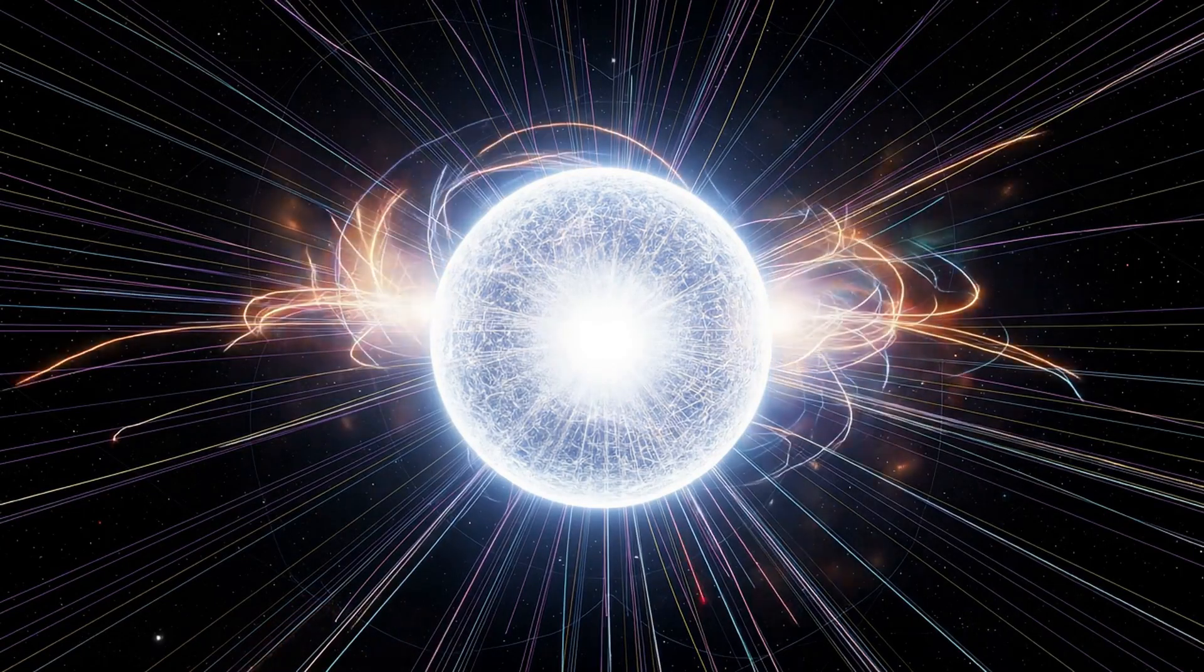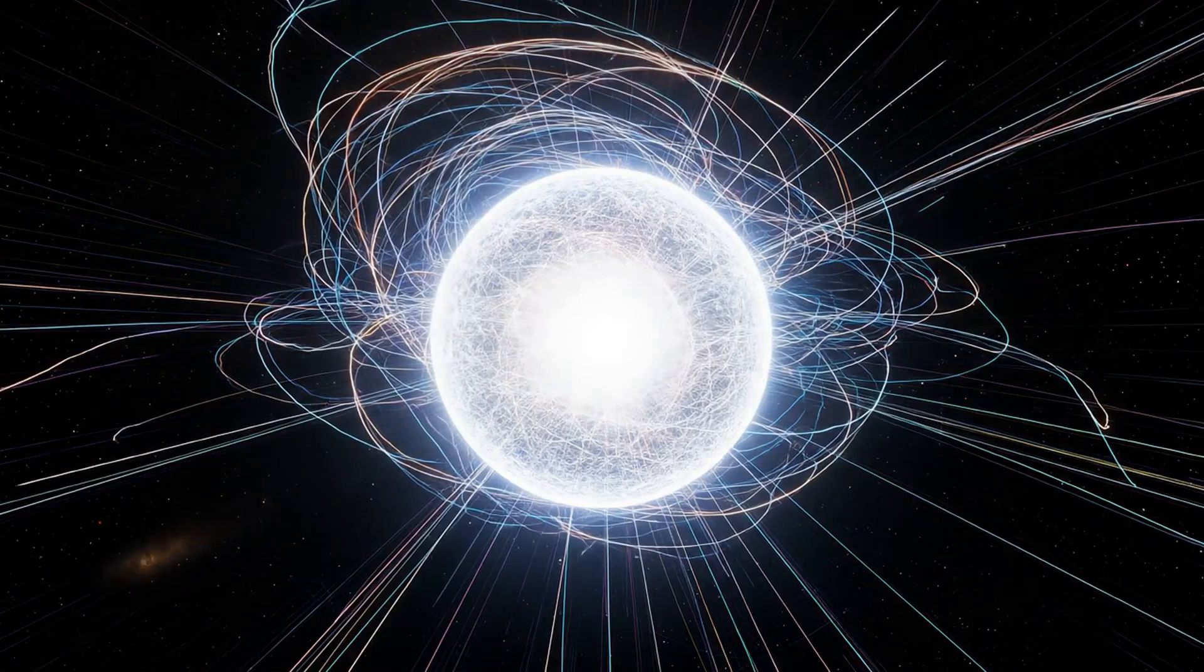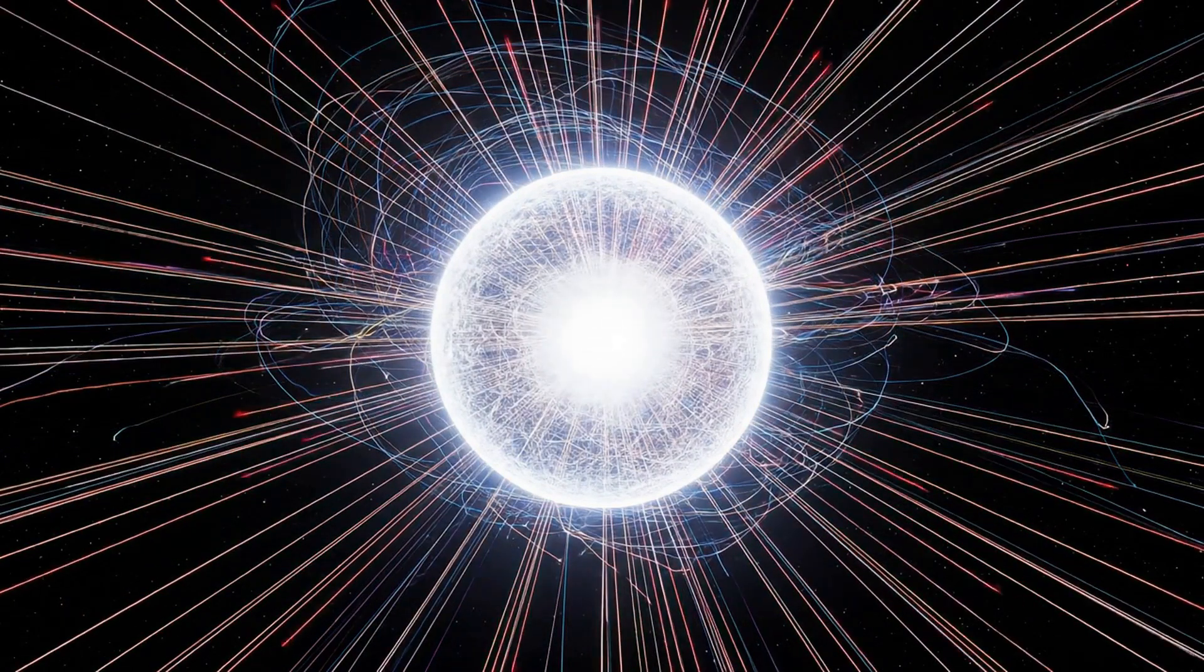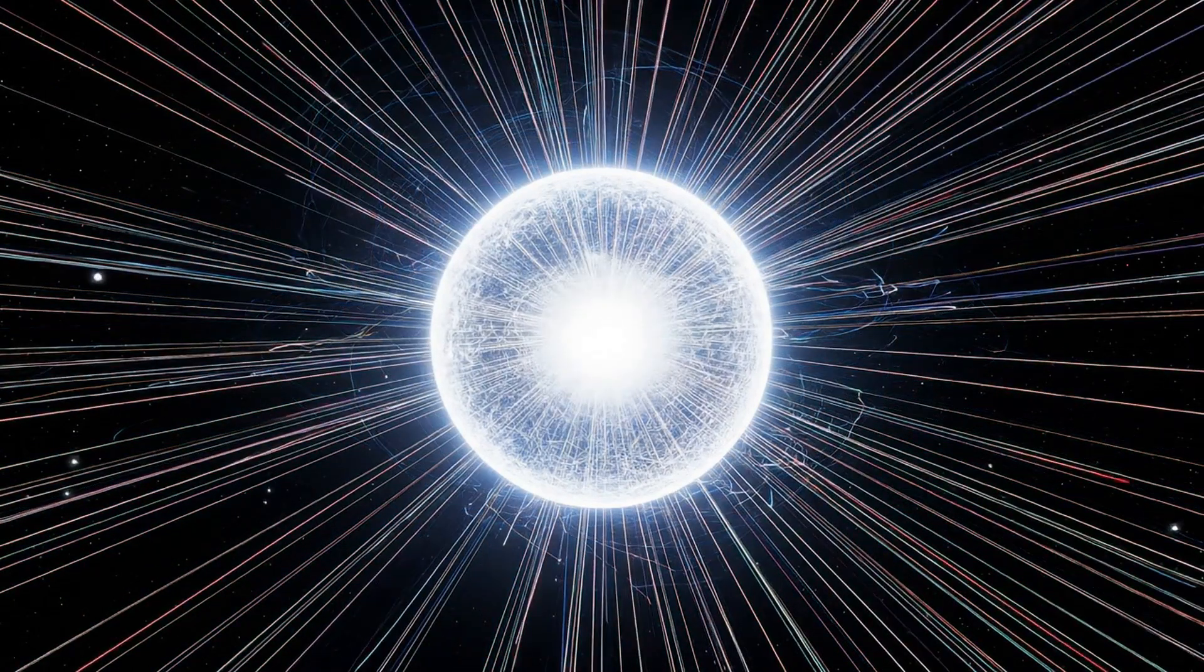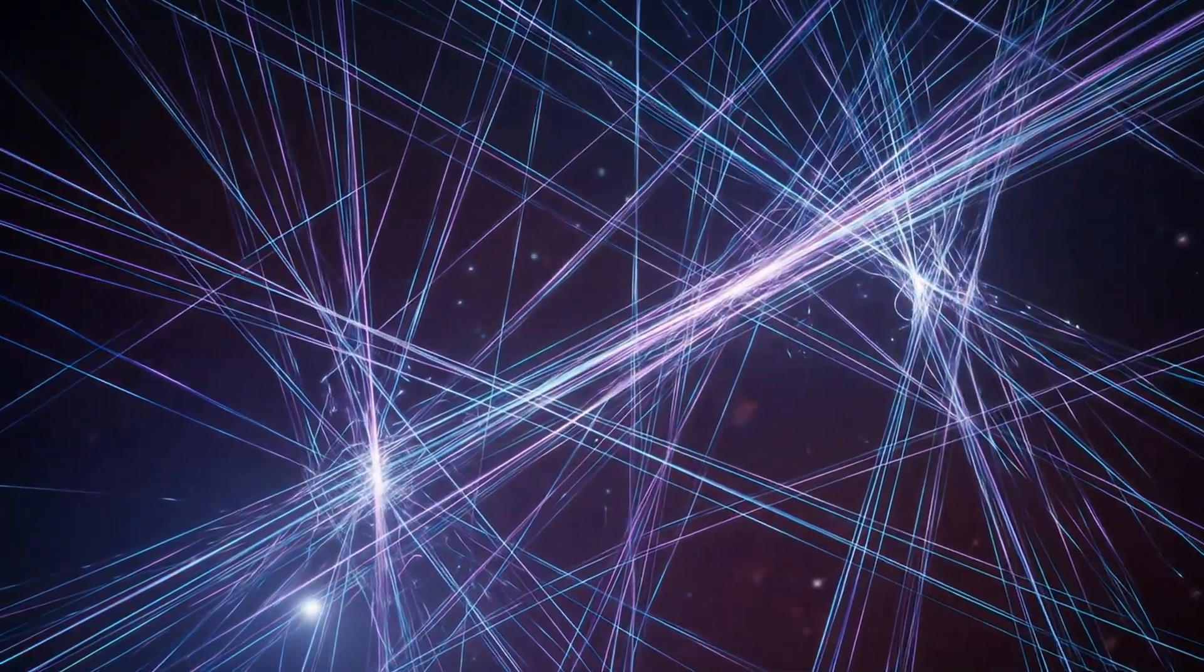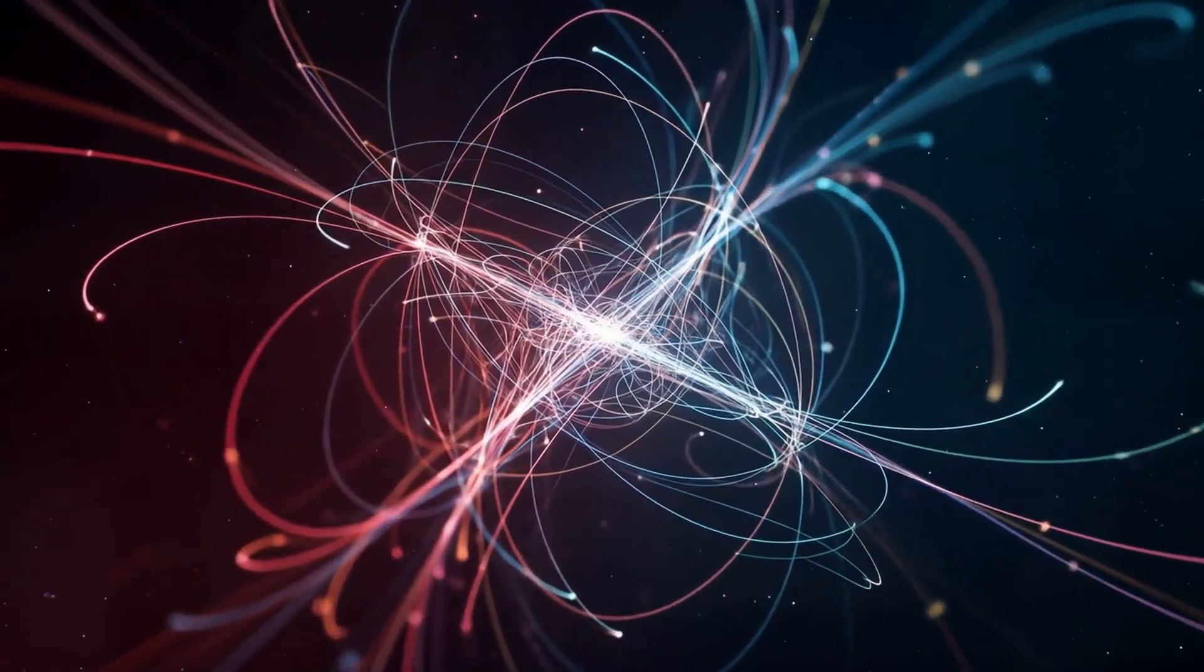That light wasn't ordinary light. It spun in every direction with every possible rhythm and every possible angle. These were not beams, they were quantum state vectors, arrows of pure spin, each one carrying a slope, a direction, and a memory, and every one of them was entangled.